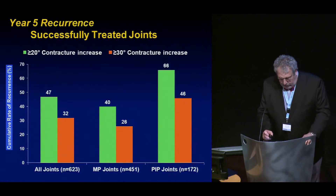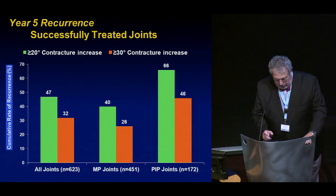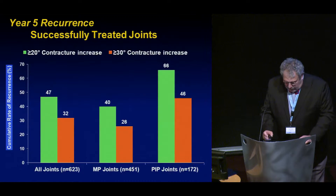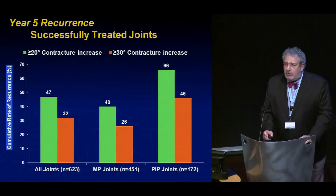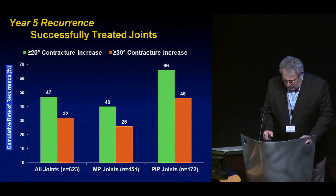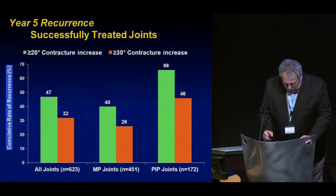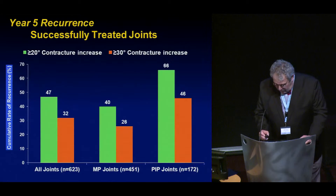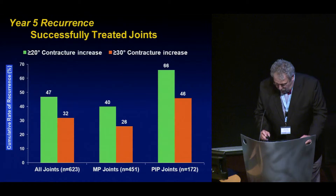The year five recurrence rates of successfully treated joints: green is 20-degree contracture recurrence, orange is 30 degrees. All joints: 47 and 32. MP joints: 40 and 26. PIP joints: 66 and 46 at five years.